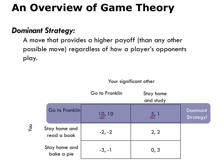What this means is that you have a dominant strategy. You have a move that provides a higher payoff regardless of what your significant other does. You should go to Franklin. Regardless of whether your significant other also goes to Franklin or stays at home and studies, going to Franklin gives you the highest possible payoff and so is your dominant strategy.